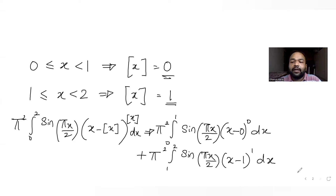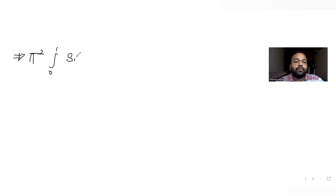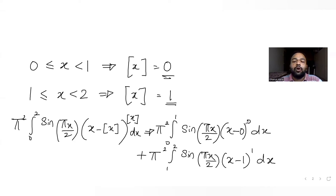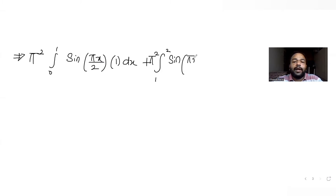So the entire expression becomes π² times the integral from 0 to 1 of sin(πx/2) times x raised to zero. Since anything raised to zero is always one, this simplifies to π² integral from 0 to 1 of sin(πx/2) dx, plus π² times the integral from 1 to 2 of sin(πx/2) times (x minus 1) dx.